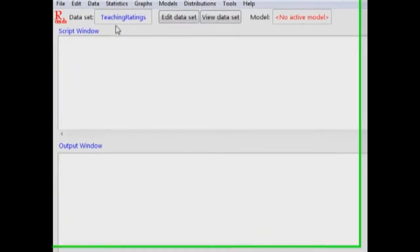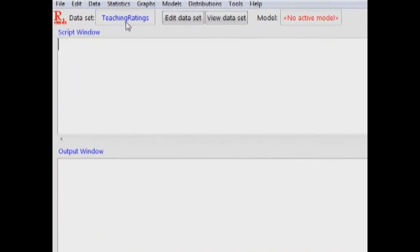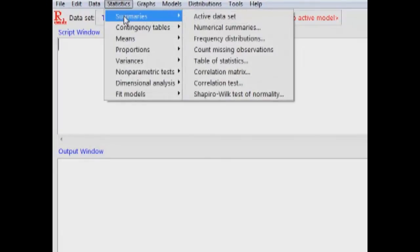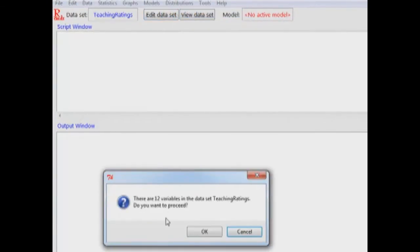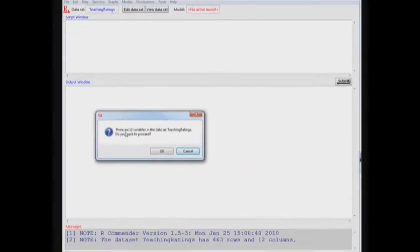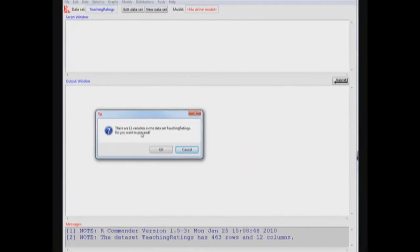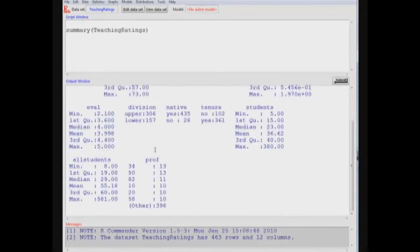I have already got the dataset loaded, teaching ratings. The first thing I would do is get the summary statistics, and I can select Statistics, Summaries, Active Data Set. The program informs me that there are 12 variables in the dataset, and would I like to proceed. And I proceed.